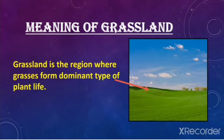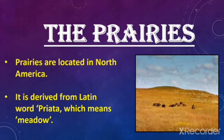Let us understand the meaning of grassland. Grassland is the region where grasses form a dominant type of plant life. The prairies are located in North America. The word 'prairies' is derived from the Latin word 'praia' which means meadow.